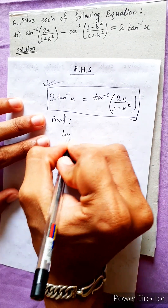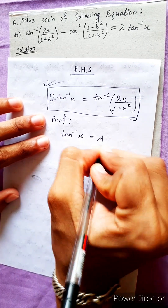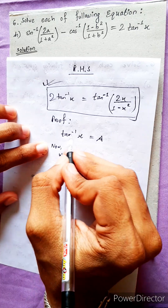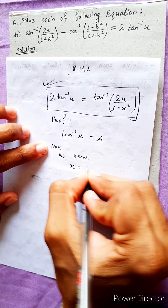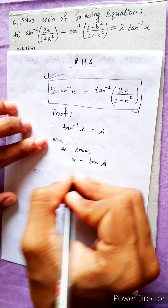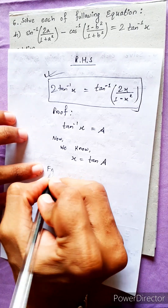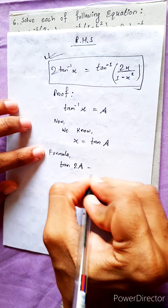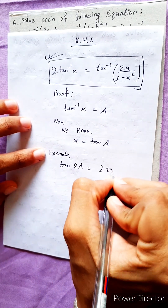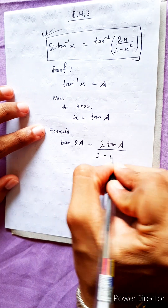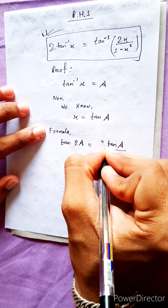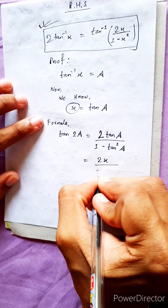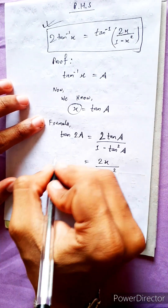This is the proof. Suppose we let tan⁻¹(x) equal to A. We know that x equals tan(A). Now using the formula: tan(2A) equals 2·tan(A) divided by (1 - tan²(A)).